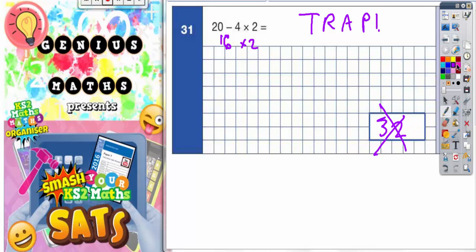The reason it's not 32 is because of BODMAS, and you've probably all learned about BODMAS. You should know that with BODMAS, the B stands for brackets, the O stands for order.